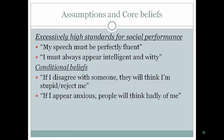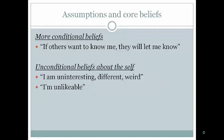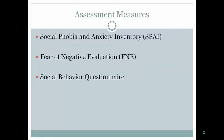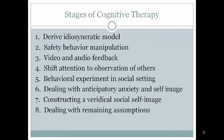Strict cognitive therapy for social phobia can also be used. Core assumptions and beliefs include excessively high standards: 'My speech must always be perfectly fluent,' 'I must always appear intelligent and witty.' Conditional beliefs include: 'If I disagree with somebody, they'll think I'm stupid,' or 'If I appear anxious, people will think badly of me.' Core beliefs often include 'I'm uninteresting,' 'I'm weird,' or 'I'm unlikable.'